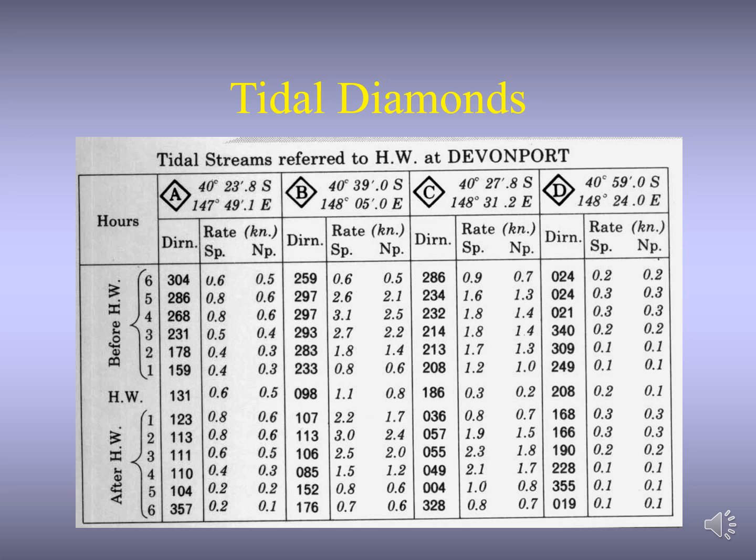On any particular chart, each tidal diamond will have a unique letter starting from A and continuing alphabetically. Somewhere on the chart, particularly on the land portion, there is a tidal diamond table. This tidal diamond table contains a grid of 13 rows and about three columns for each diamond. The three columns show the bearing, or the set, or the direction of the tidal stream, and its speed and the resulting drift — the rate of the current in knots.